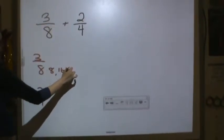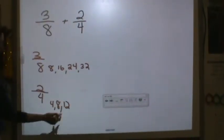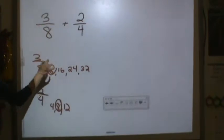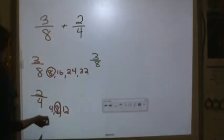Eight, sixteen, twenty-four, thirty-two. Now we're going to do four, eight, twelve. Alright, I see a common multiple. So I'm going to convert three-eighths to three-eighths because I'm going to do eighths again.